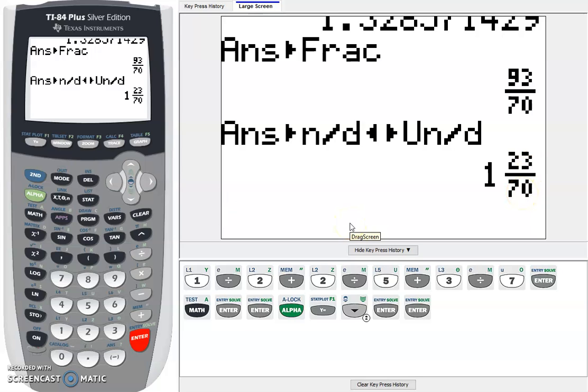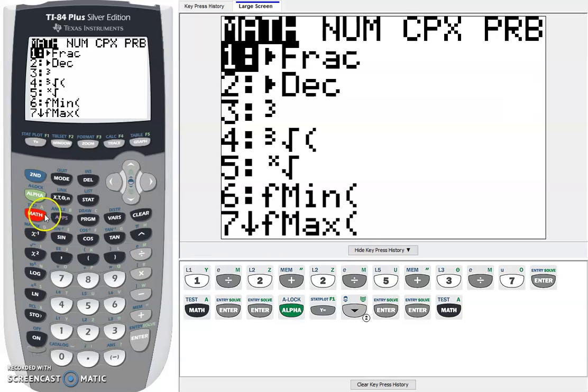What if I had a fraction like this and I want it as a decimal? Very simply, there's an easy way. We can either press math and go down to decimal number 2 and do that, or I'm going to quit out of this.